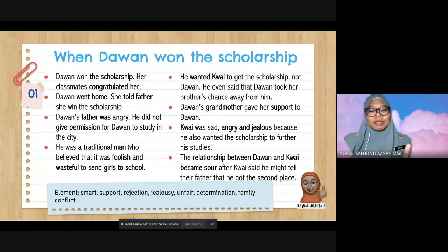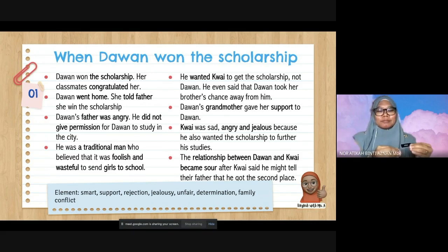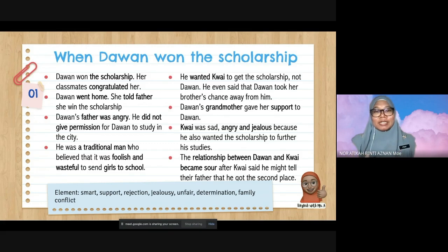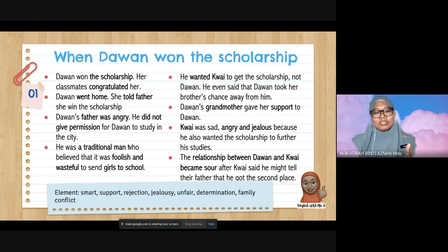This event began the conflict in the family — conflict between Dawan and father, and between Dawan and Kwai. The key elements here are: Dawan being smart, support from grandmother, rejection from father, jealousy from Kwai, unfairness, determination, and family conflict.